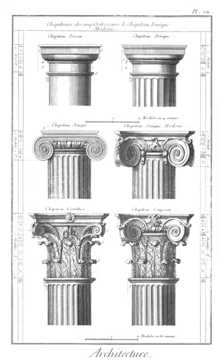Ephebium: large hall in the ancient palestra furnished with seats, the length of which should be a third larger than the width. It served for the exercises of youths of from 16 to 18 years of age.